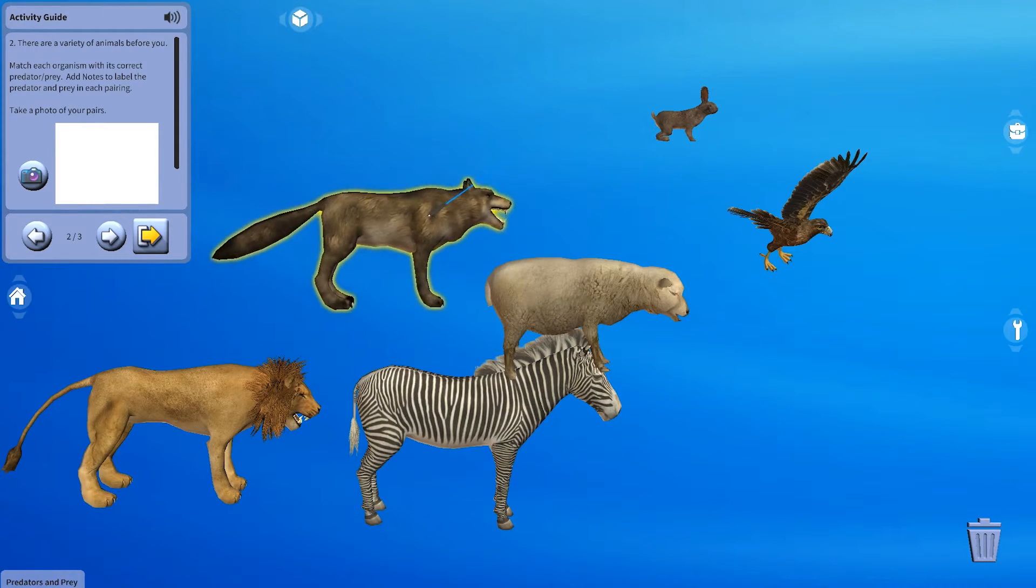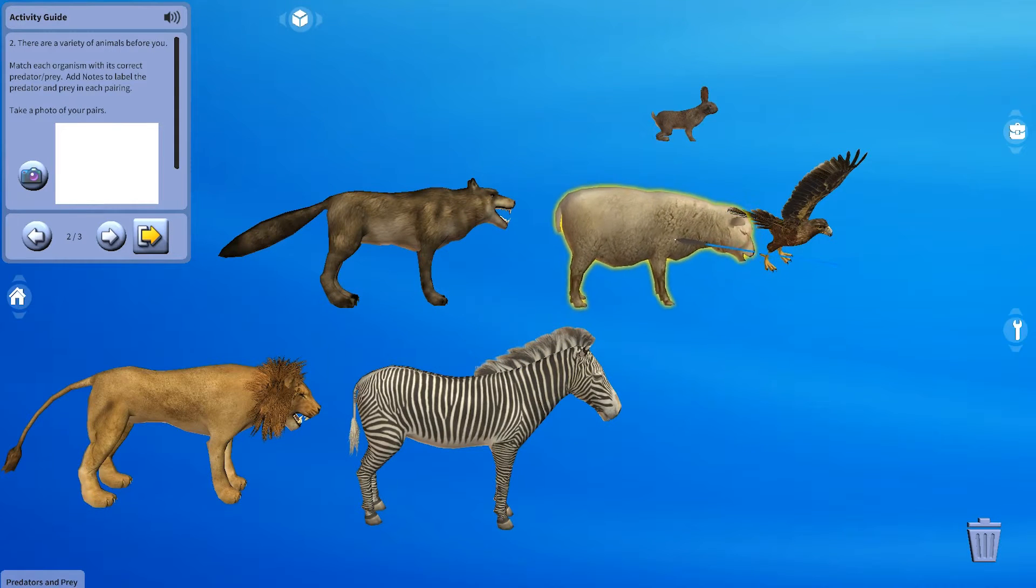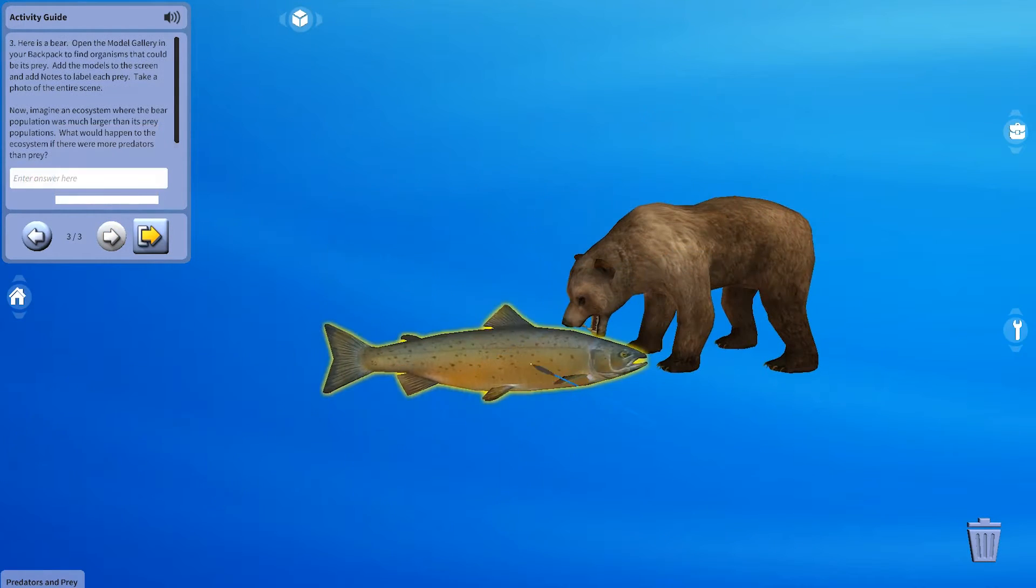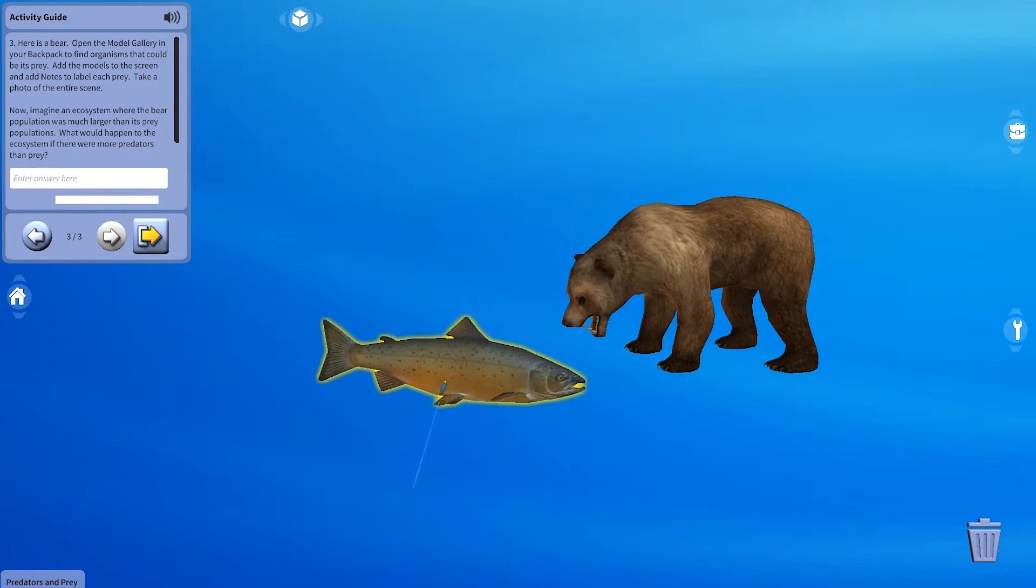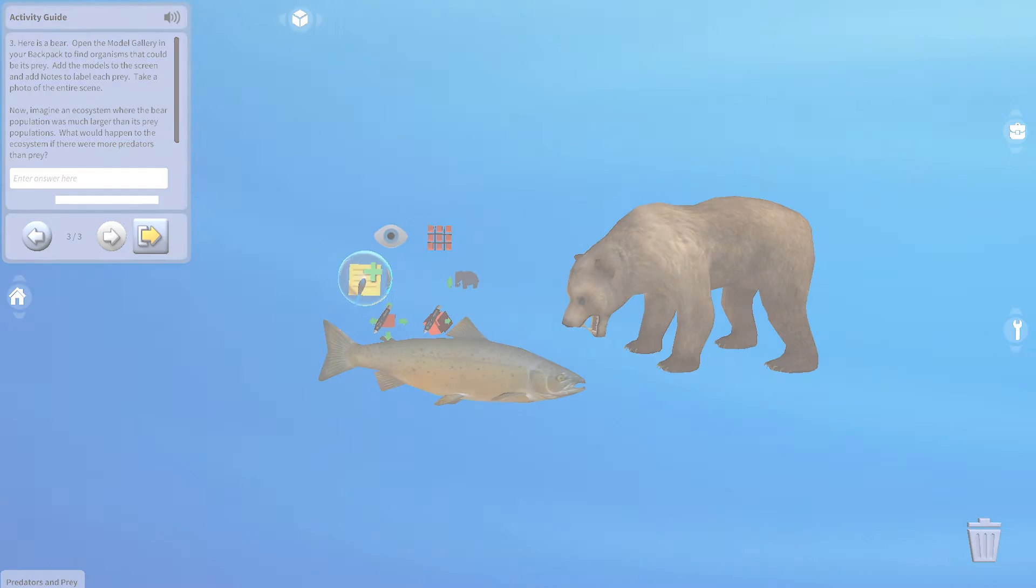In the predators and prey activity, we will examine and identify several predator and prey relationships. Then, we'll discuss how these relationships are essential for a balanced ecosystem.